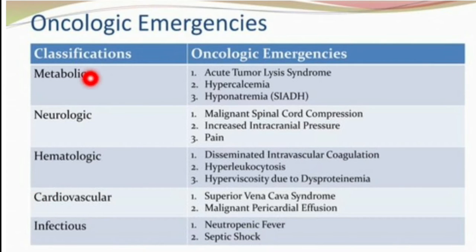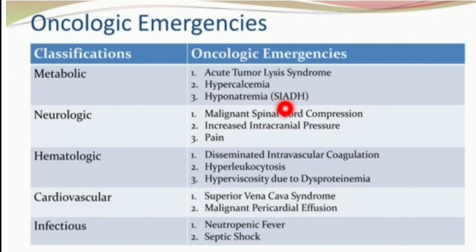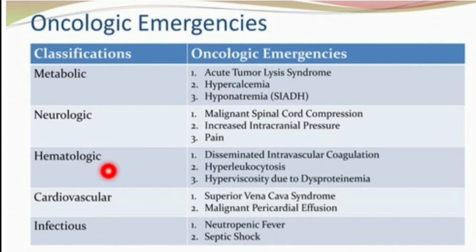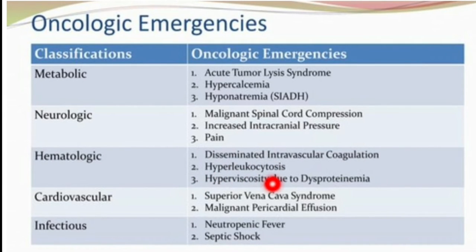In the metabolic category, it consists of acute tumor lysis syndrome, hypercalcemia, and hyponatremia. SIADH is syndrome of inappropriate antidiuretic hormone. In neurologic, it includes malignant spinal cord compression, increased intracranial pressure, and pain. Hematologic consists of disseminated intravascular coagulation (DIC), hyperleucocytosis, and hyperviscosity due to dysproteinemia. Cardiovascular involves superior vena cava syndrome and malignant pericardial effusion.